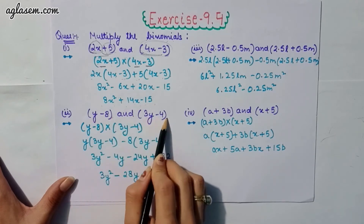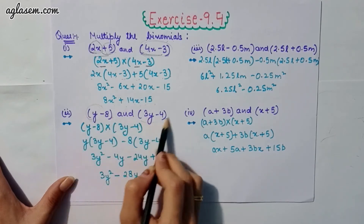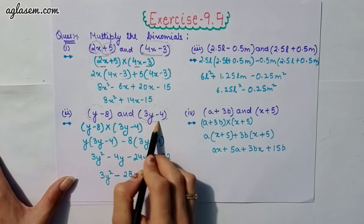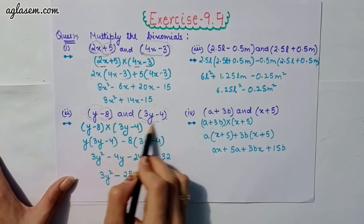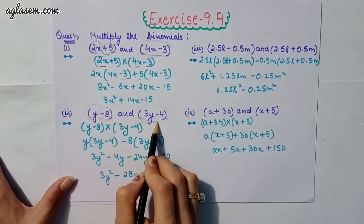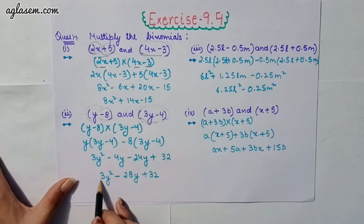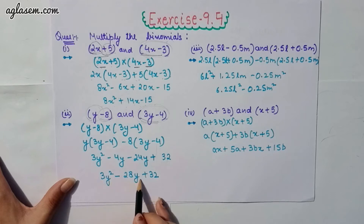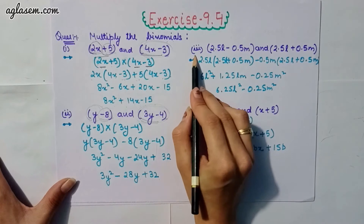The second part says (y − 8) and (3y − 4). Again, y will be multiplied by this whole bracket and minus 8 will be multiplied by this whole bracket. By solving this we will get 3y² − 28y + 32.